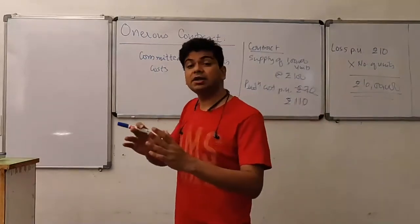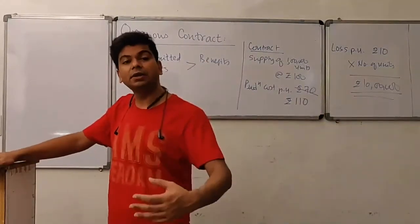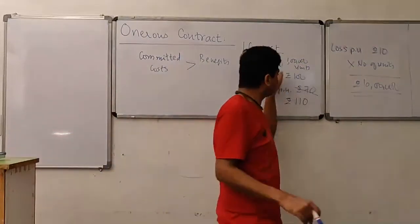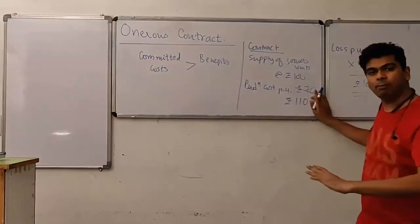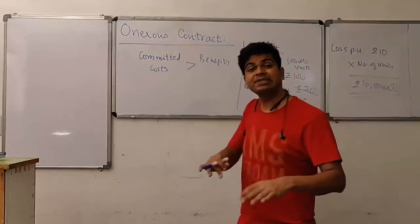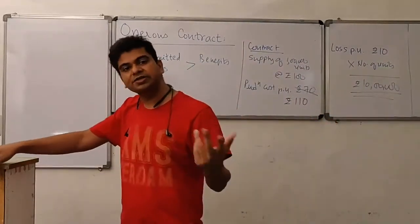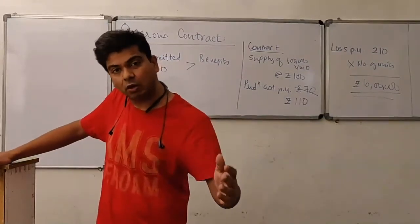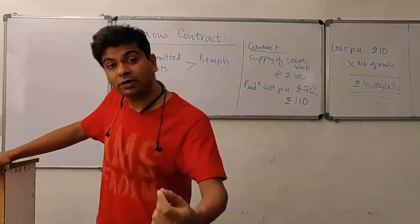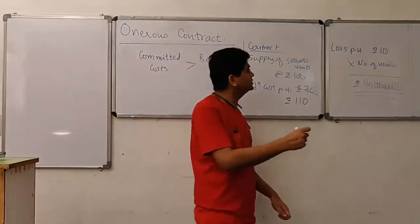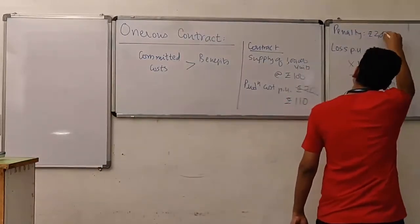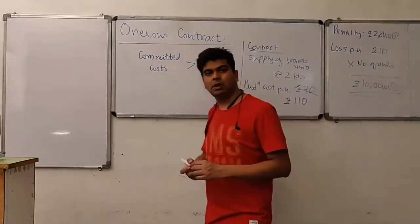There is no clause in the contract to increase the selling price — it is fixed at ₹100 with no scope for revision. So you have another choice: you may simply set aside the contract and tell the other party it is not possible for you to continue. However, if you set aside the contract, there is a penalty clause requiring you to pay a penalty of ₹2 lakhs.